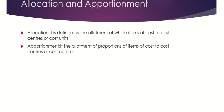Apportionment, on the other hand, is the distribution of cost because you cannot identify where the transaction cost belongs to a specific cost center. It is the allotment of proportions of items of cost to cost centers on an equitable basis. For example, rent of the factory building cannot be allocated to a separate department because the entire building is utilized by the organization. In that case, the cost is apportioned — not allocated — but distributed to various departments on a suitable basis.